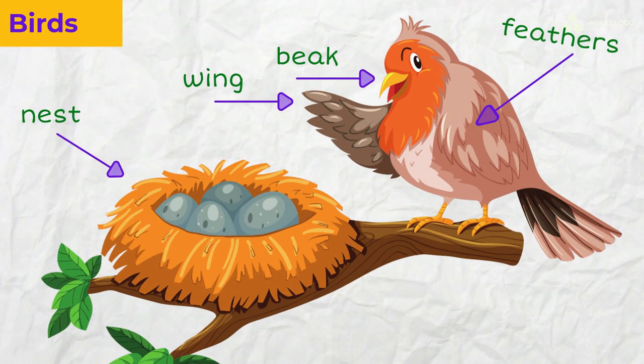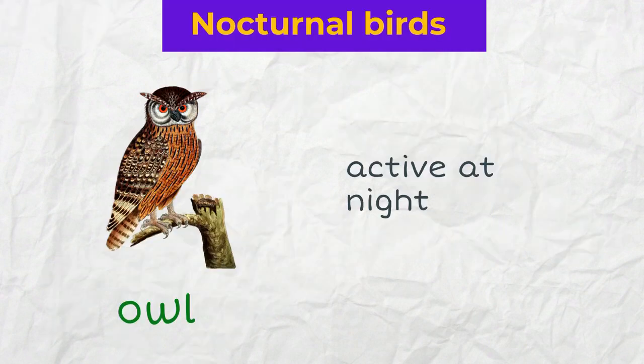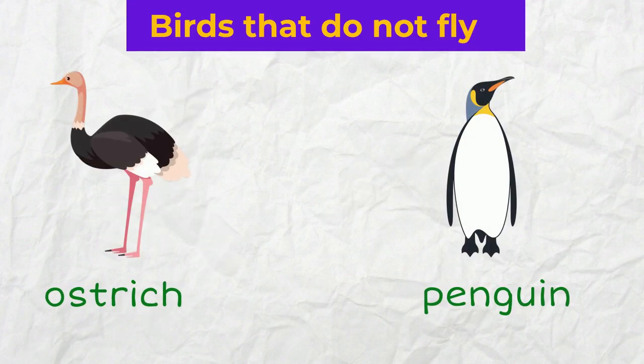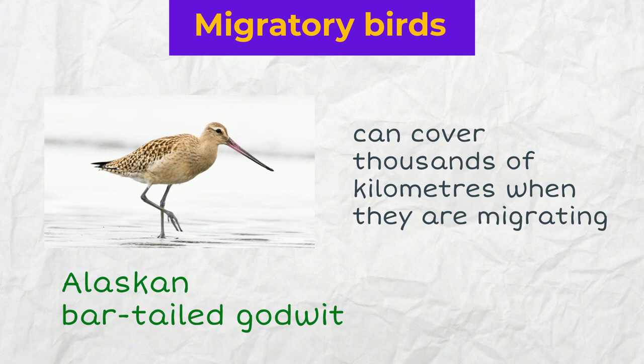Most birds have feathers, wings, and a beak, and they build nests. Some birds are nocturnal, which means they are active at night, like an owl. Some birds do not fly, like an ostrich and a penguin, and others, on the contrary, can cover thousands of kilometers when they are migrating.